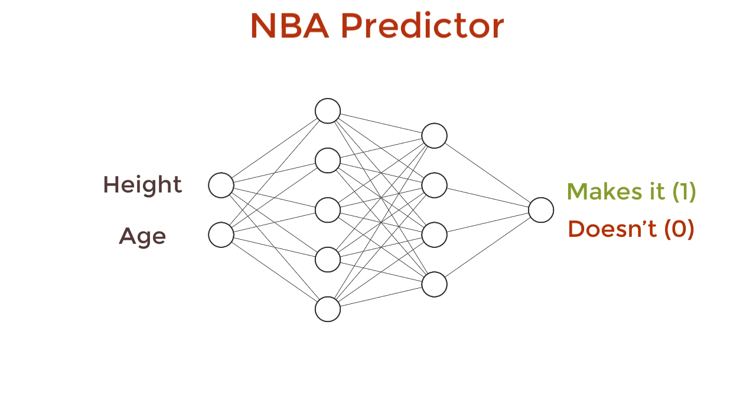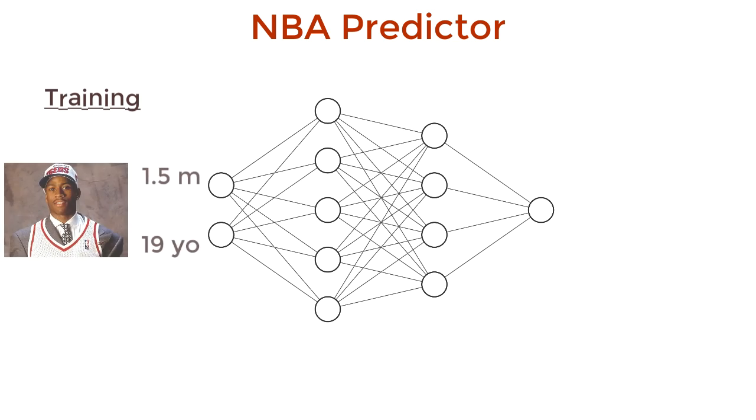Let's take an interesting problem of an NBA predictor. Determine whether a person will make it to the NBA based on their height and age. Allen Iverson. This guy is going to make it to the NBA. Got you.